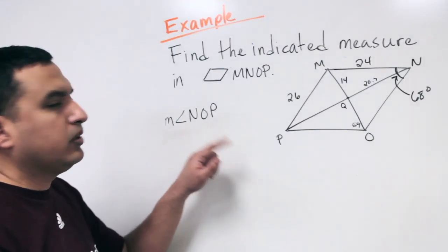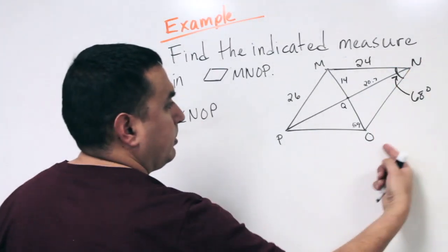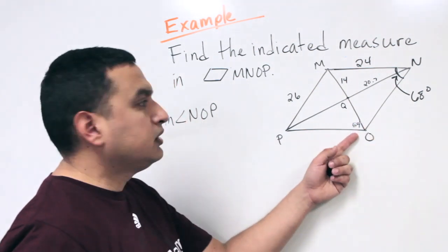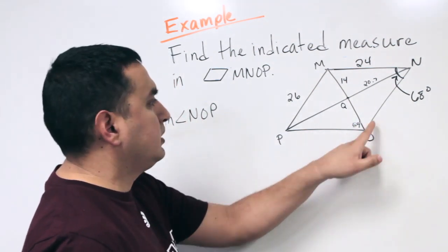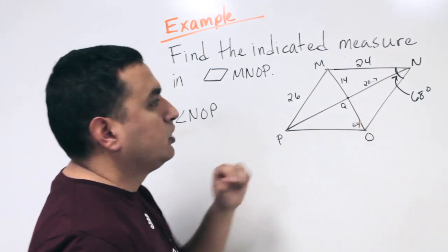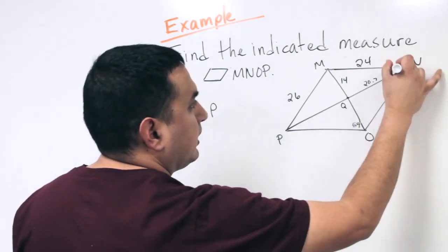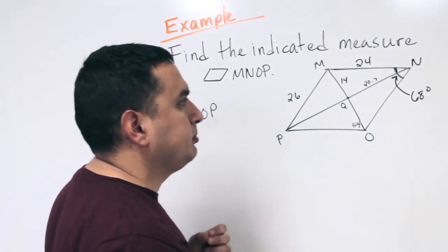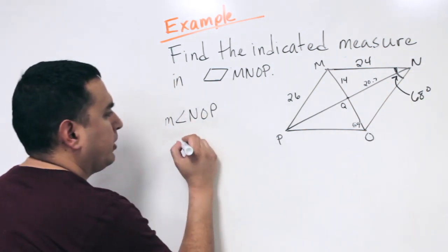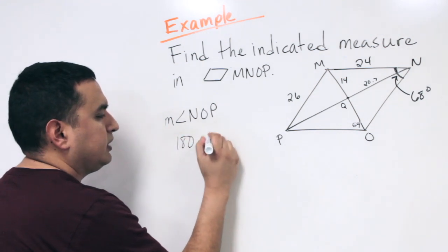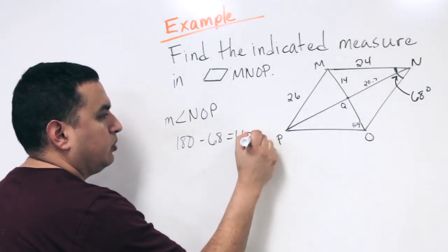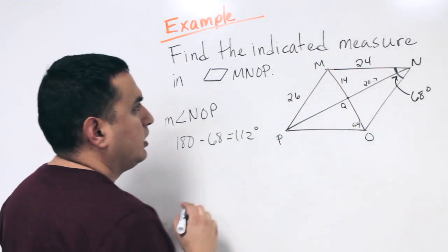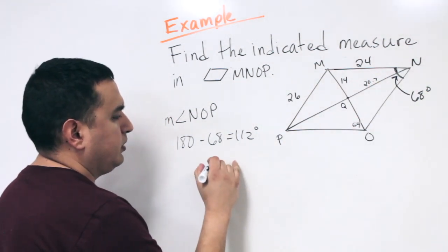On this one, they're asking for the measure of angle NOP, the bottom angle. There's a 59 marked, but what I know is that the 68-degree angle is here, and these two would be consecutive angles. So I do 180 minus 68, which gives me 112. The measure of angle NOP is 112 degrees.